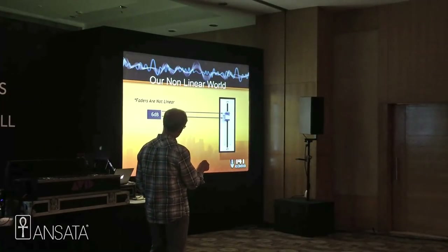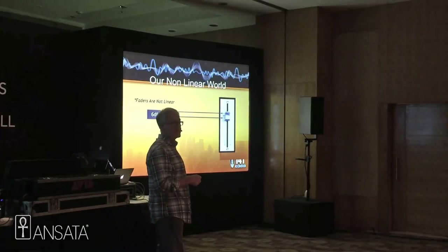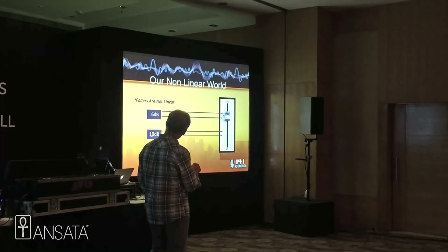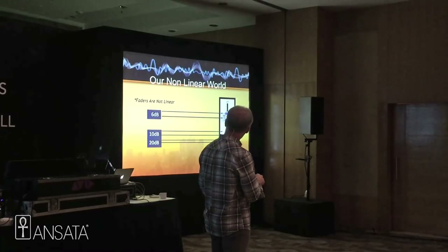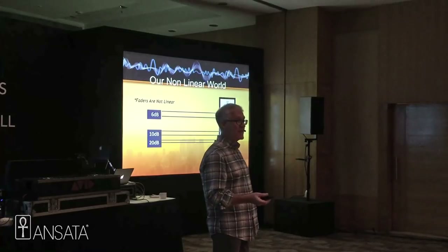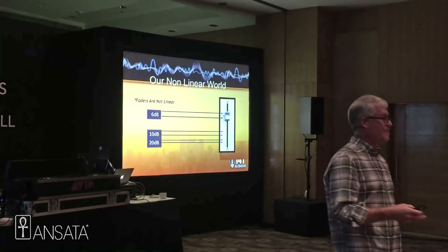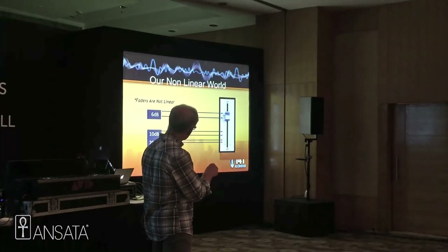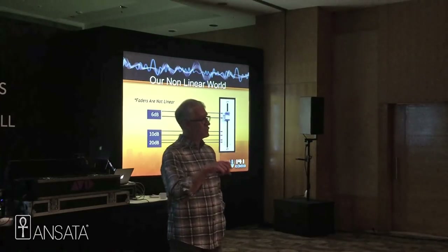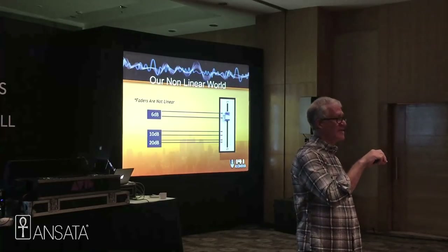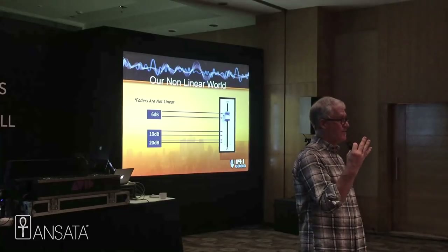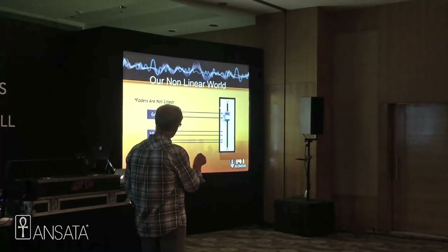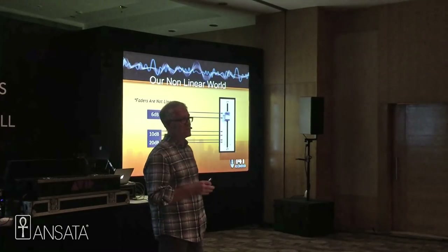If we take a fader in the upper position and move it a certain distance, that represents 6 dB of change. If we go down to the lower portion of the fader and make a smaller distance, that actually represents 10 dB of change. And if we go all the way down and make a really small change, that represents 20 dB of change to our signal. So it's not linear. One of our goals with optimizing gain structure is to keep our faders in the upper area — we want high-resolution mixing. By high-resolution, I mean I can make very small, delicate changes on the fader and have them have meaning.